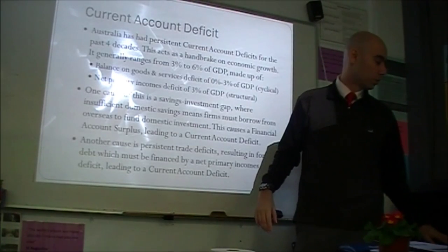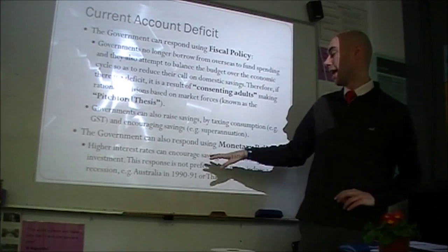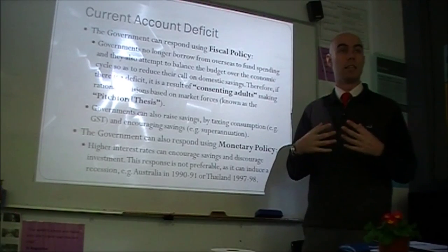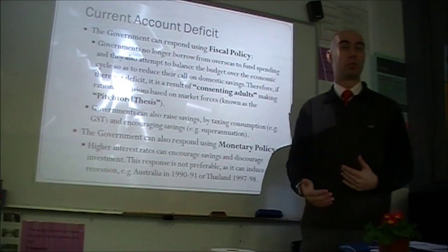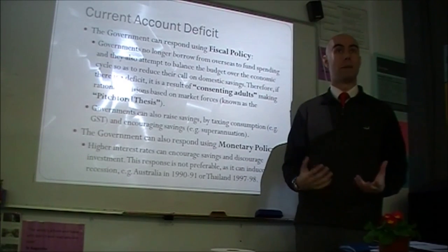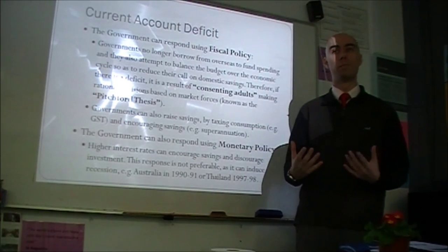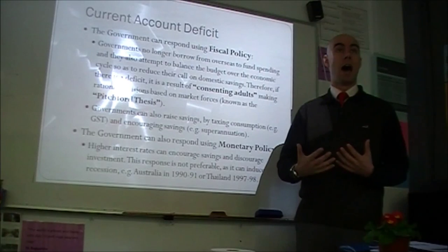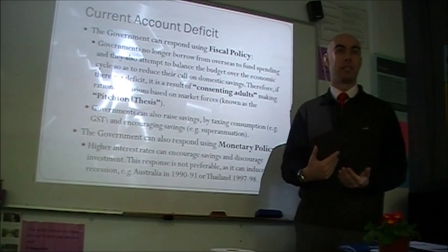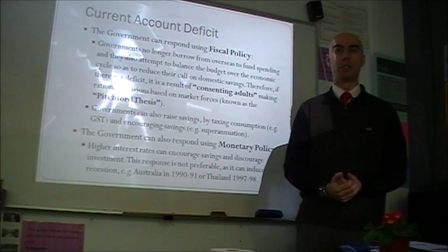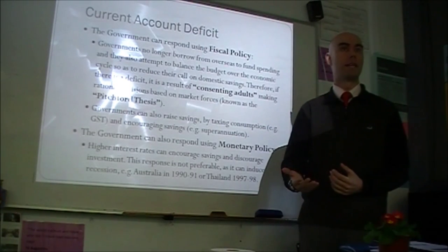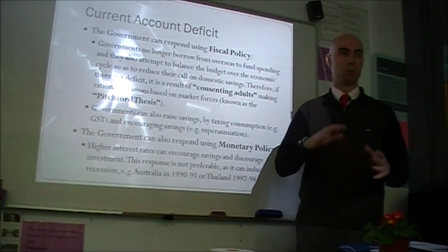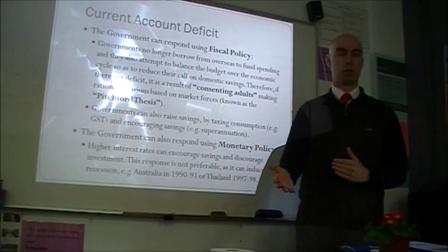In Thailand in 1997-98, the first Asian country to enter the financial crisis, the IMF encouraged them to raise interest rates and run a budget surplus to maintain stability. It did provide some external stability, but also induced a recession — which caused more capital to leave the country and actually exacerbated the external stability issues. The IMF learned from that and didn't make the same mistake during the GFC, instead discouraging central banks and governments from that approach and encouraging economic stimulus alongside eventual budget surpluses.